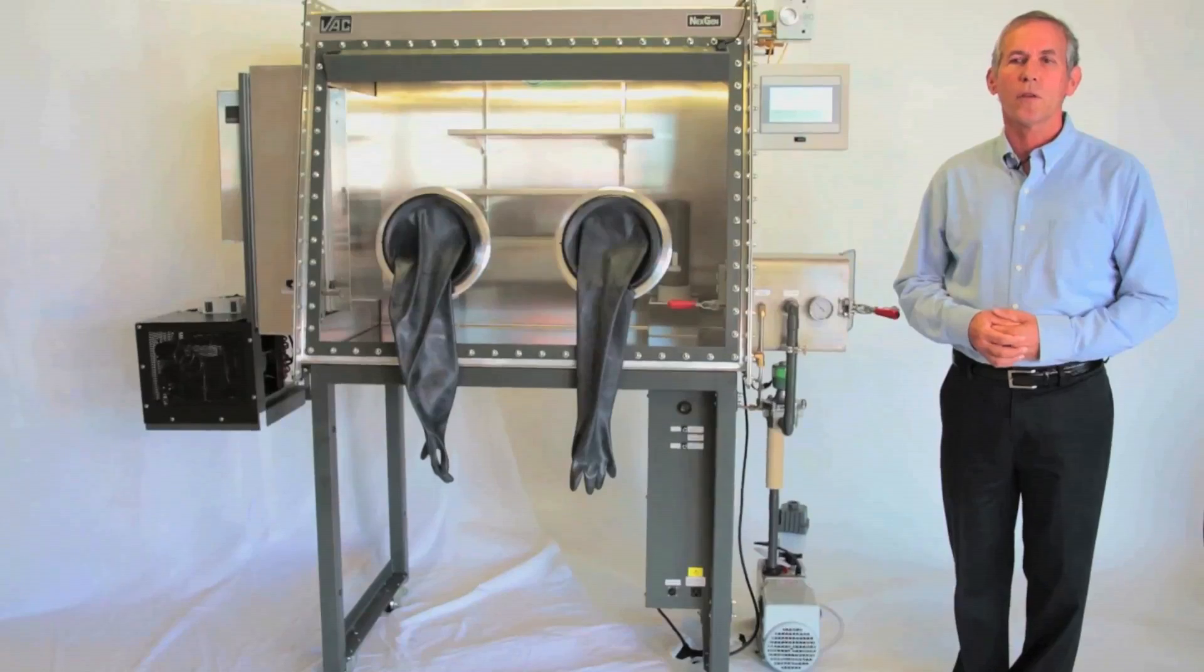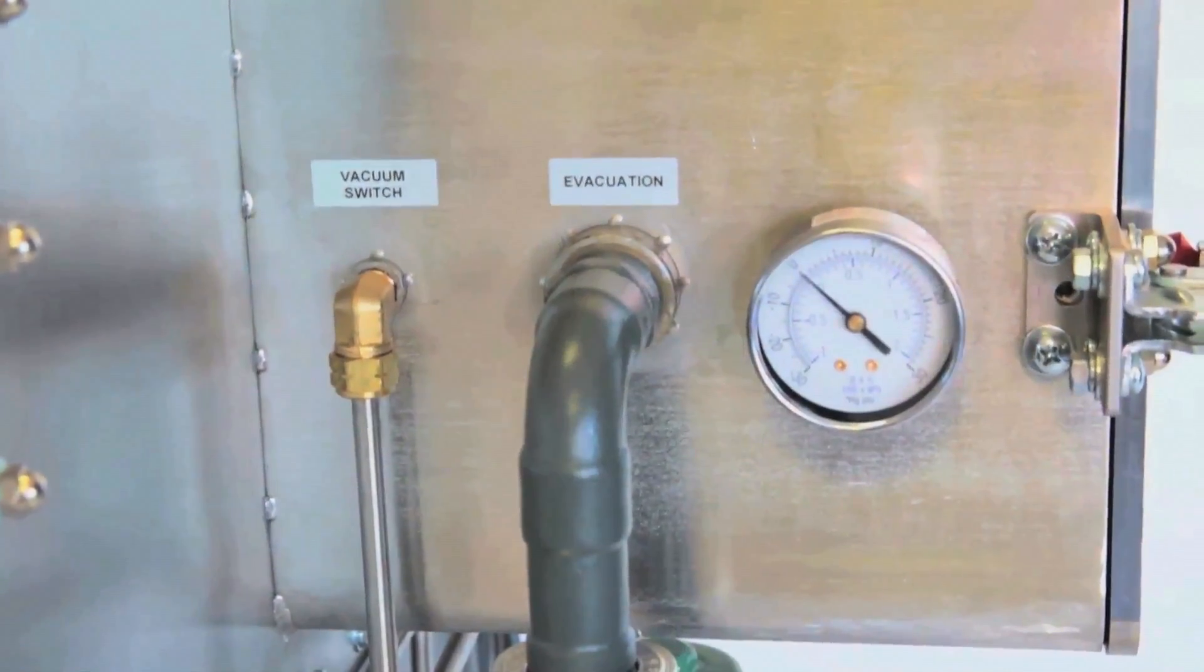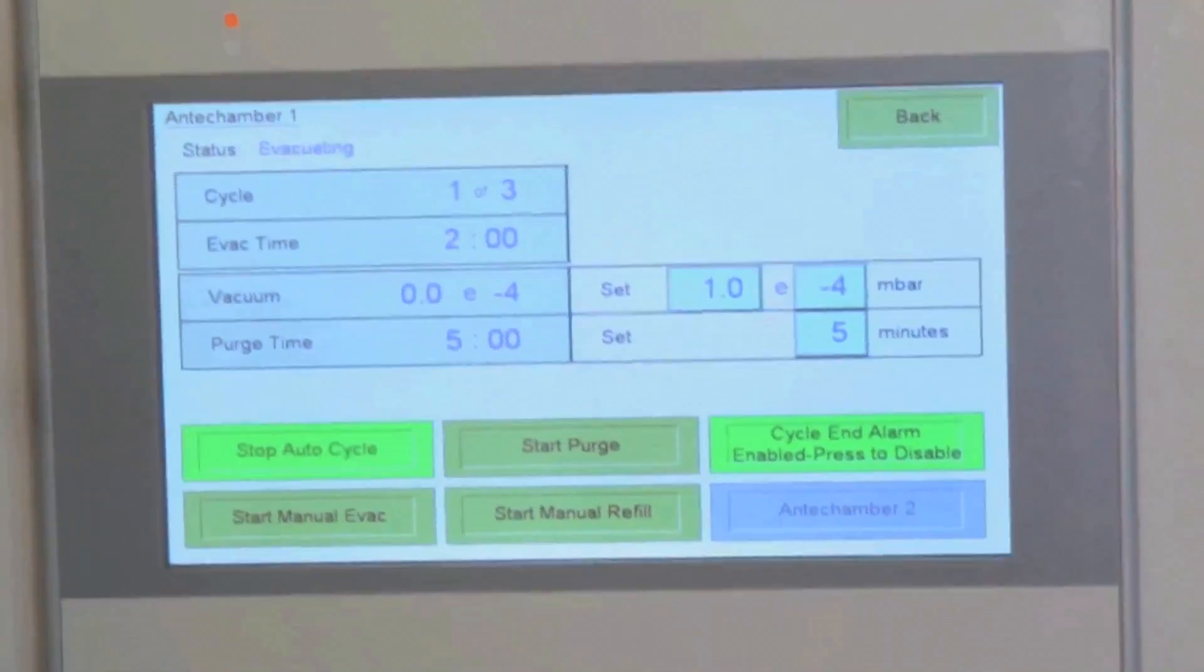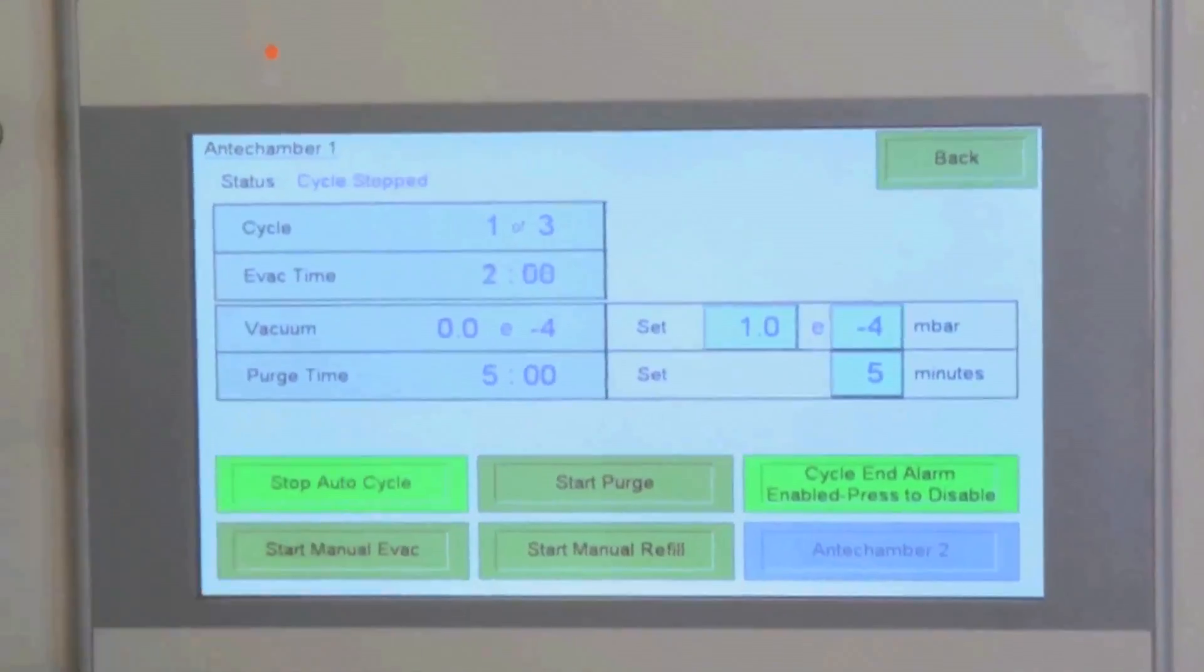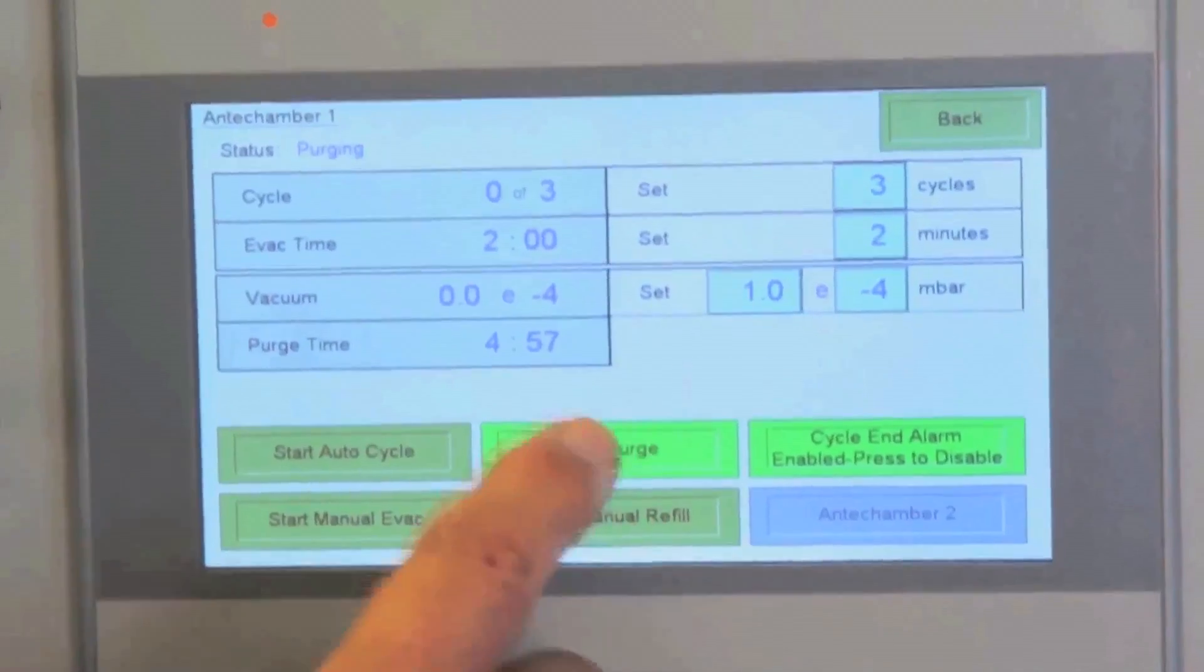For moving material into or out of the glove box, the anti-chamber may be operated manually or with optional automatic functions. The automatic functions include timed automatic evacuation and refill, pressure-based evacuation and refill, and timed purge.